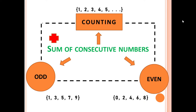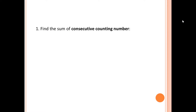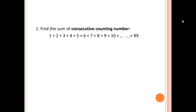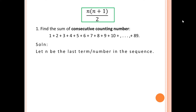Let's start with problem number 1. Find the sum of consecutive counting numbers: 1 + 2 + 3 + ... + 89. In order to solve this, let us have the formula n times (n + 1) over 2. Here, n is the last term or number in the sequence, and in this problem, the last number is 89, so n = 89.